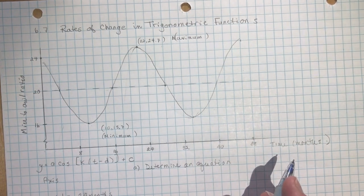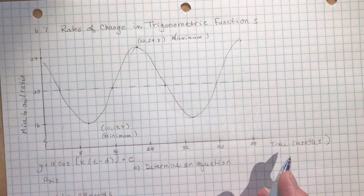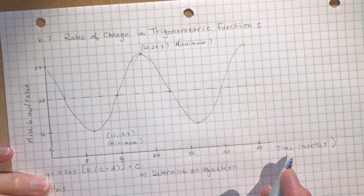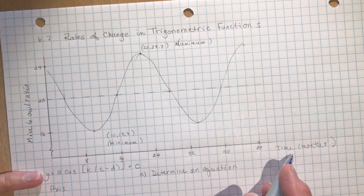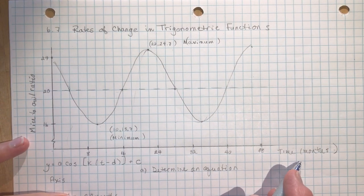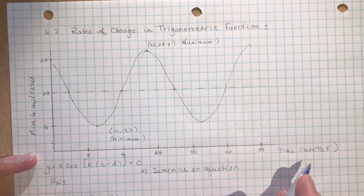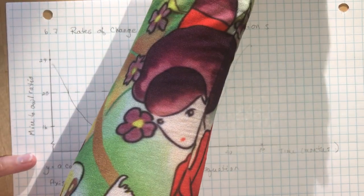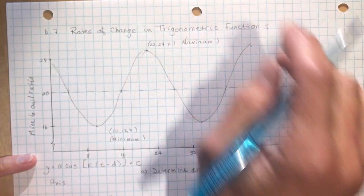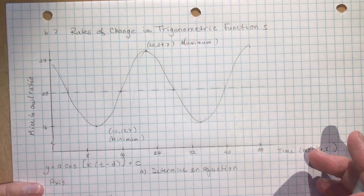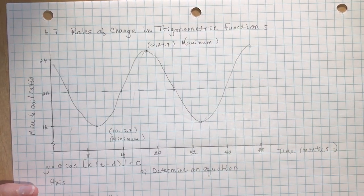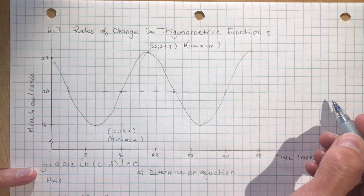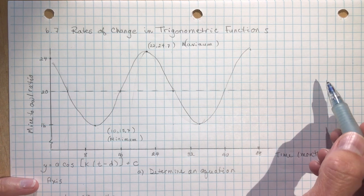6.7 Advanced Functions, Rates of Change, and Trigonometric Functions. So now you know by now what a rate of change is. You've done a lot of them. They keep popping up at the end of every chapter, and this chapter is no exception.